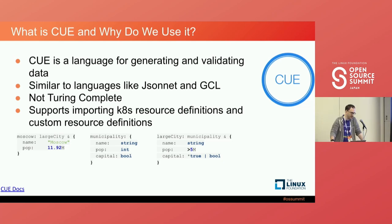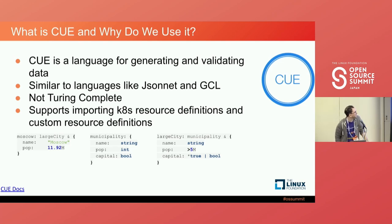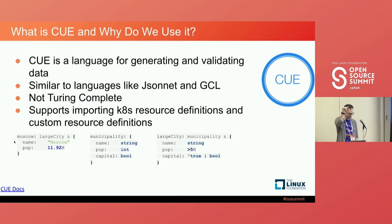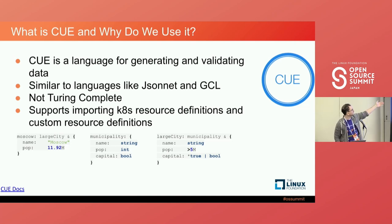In the example, you have a normal struct: name is a string, population is an int, capital is a Boolean. In CUE you can define constraints — the population of a large city must be greater than five million. Moscow has a population of 11.92 million, which is greater than five million, so yes, it's a large city. Capital defaults to true. If the population were less than five million, it would fail validation. CUE makes it very easy to define constraints.